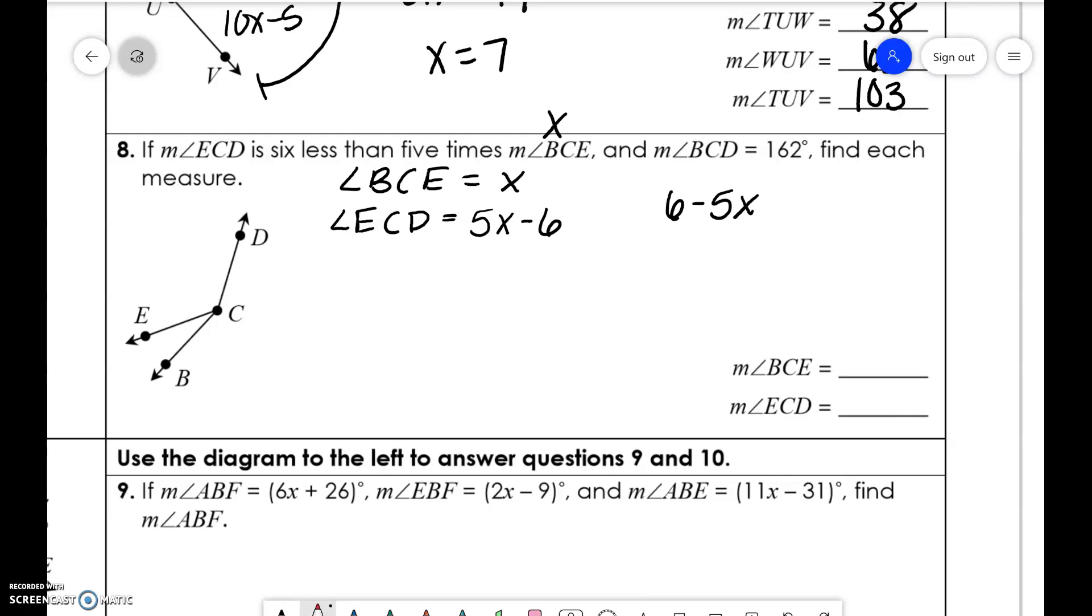You cannot write 6 less than 5 times. That's not the same. Do you notice then here that this is positive and this is negative? Okay. So you always want to make sure that you write it with your variable first and then add or subtract the number that comes after it.